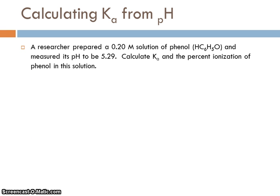In this first problem, a researcher prepared a 0.20 molar solution of phenol and measured its pH to be 5.29. Calculate the Ka and the percent ionization of phenol in the solution.